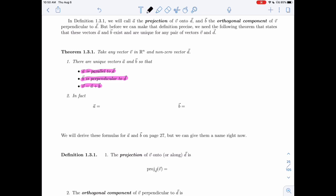In fact, this theorem is excellent because it actually gives you a formula for them. So A is going to be V dot D over length of D squared times D. And B is going to be V minus that like this.